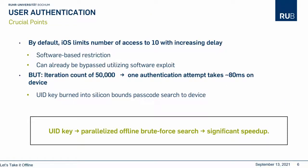The described process has two implications. First, it binds the passcode search to a single device, since the UID key is burned into silicon and is unique for every device. Second, the iteration count of how often the AES is invoked is set such that every passcode guess takes 80 milliseconds, making on-device brute force search slow. For the iPhone 4, this results in an iteration count of 50,000. A further measure to prevent brute force attacks is an increasing time interval between subsequent passcode inputs, which is a solely software-based restriction that can already be bypassed by existing software exploits — so extracting the UID key would not have any benefit there.